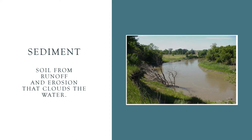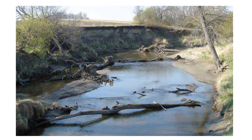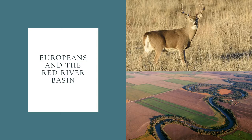Sediment is a feature of the Red River as it slowly migrates across the floodplain. As the river naturally migrates across the landscape, it is going to erode in some places and deposit soil in other places. As the Red River is still seeking to establish a more permanent and defined channel, this process is happening a little more quickly than we would find in other river systems.